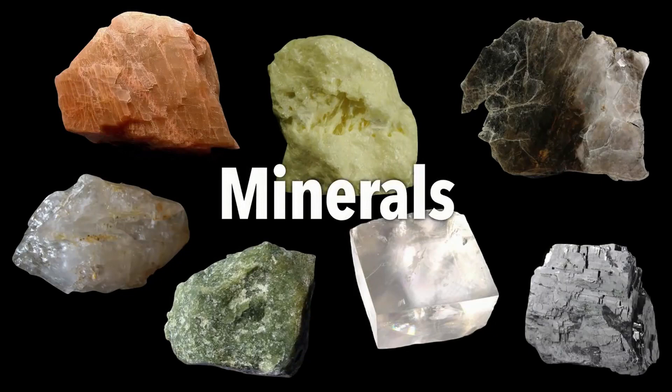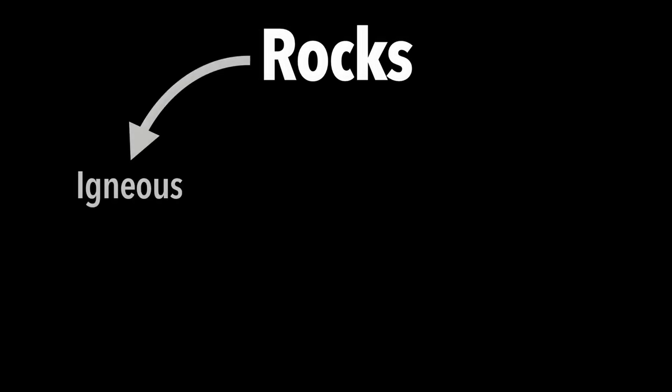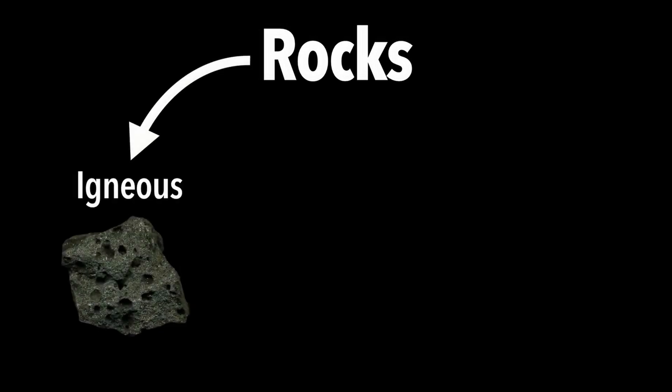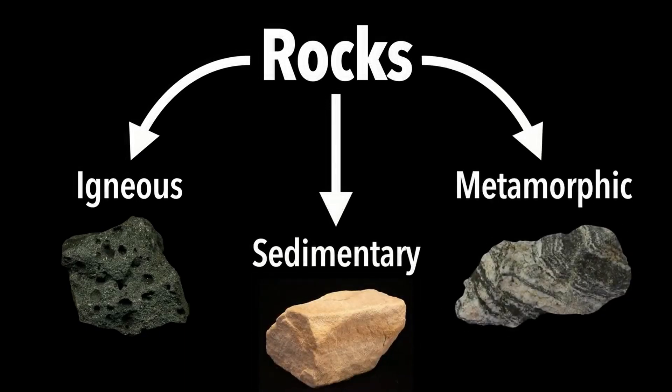What happens when minerals combine in nature? Well, we get rocks. Minerals are the building blocks of rocks. There are thousands of types of rocks on Earth, so we need to classify them. We've come up with a classification system in which rocks fall into one of three types, based on the way they form: igneous rocks from magma or lava, sedimentary rocks from compacted sediments, and metamorphic rocks exposed to intense heat and pressure.